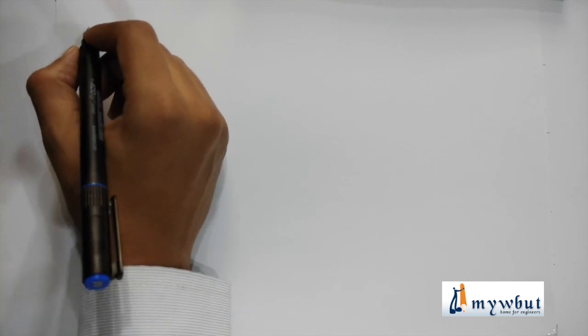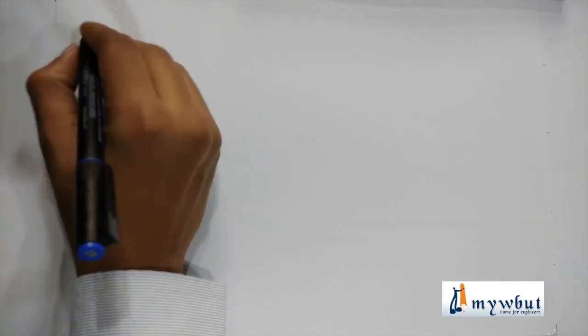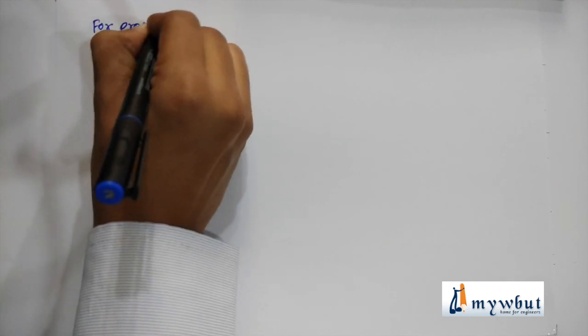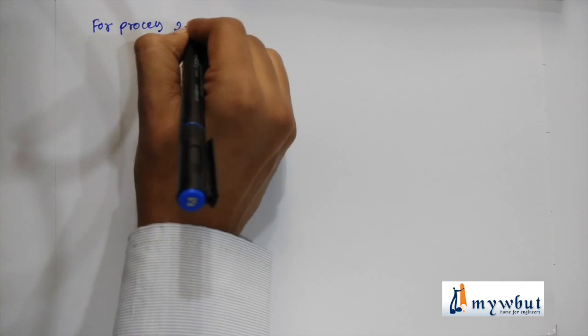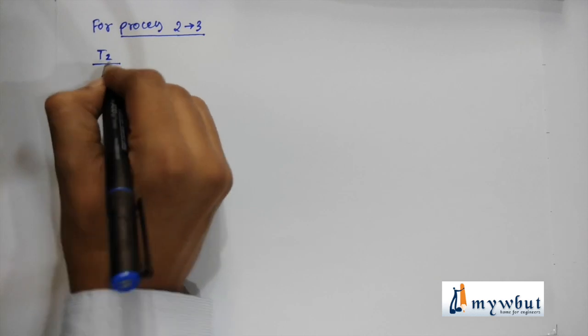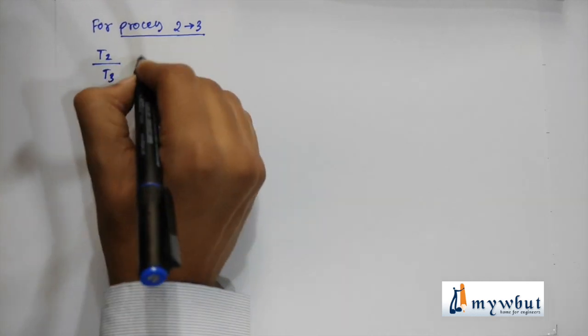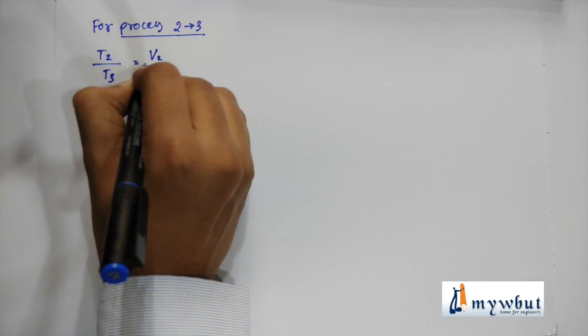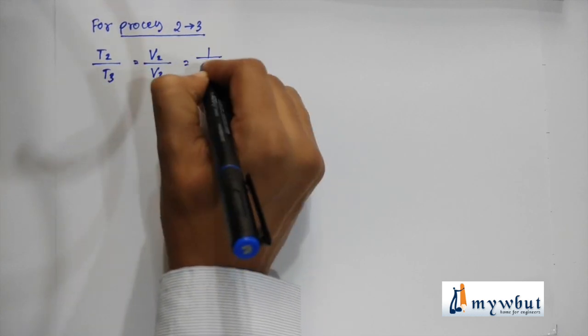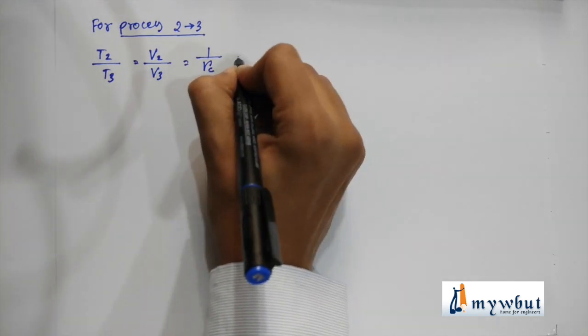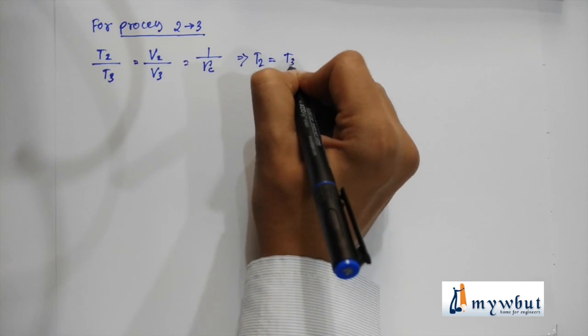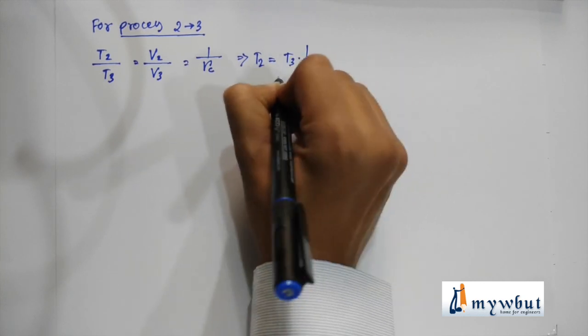Now for process 2 to 3, we can define T2/T3 is equal to V2/V3, that is equal to 1/RC. So T2 is equal to T3/RC.